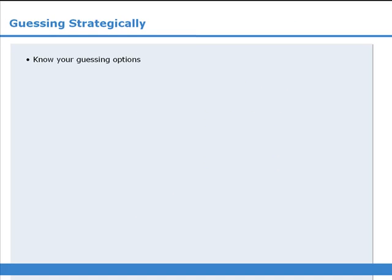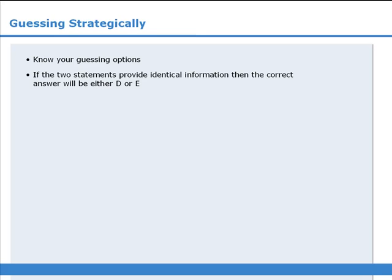To summarize: if you are forced to guess on a data sufficiency question, be sure to know your guessing options, which can be deduced by using the elimination method. Also, if the two statements provide identical information, then the correct answer must be either D or E.